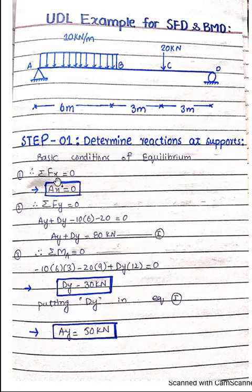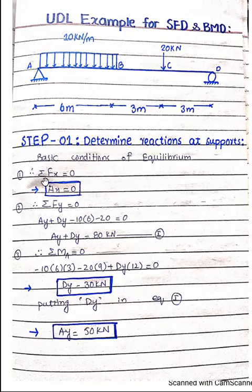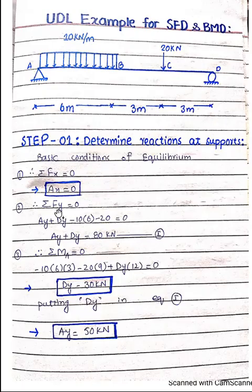To determine the reactions, we use the basic conditions of equilibrium — the same as applied in the previous example with point loads. We keep three equations in mind: the sum of all horizontal reactions equals zero, and since no horizontal reaction is acting at this structure it equals zero; also, the sum of all vertical reactions should equal zero.